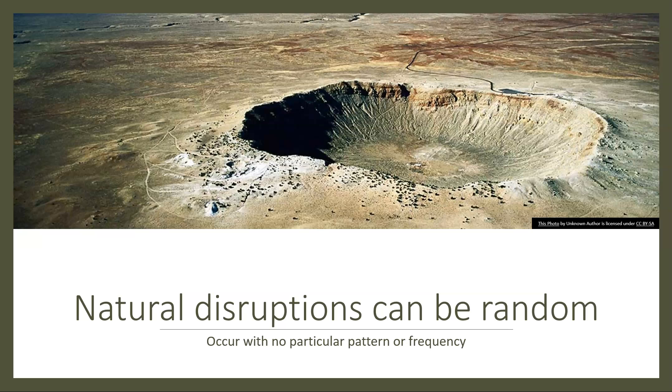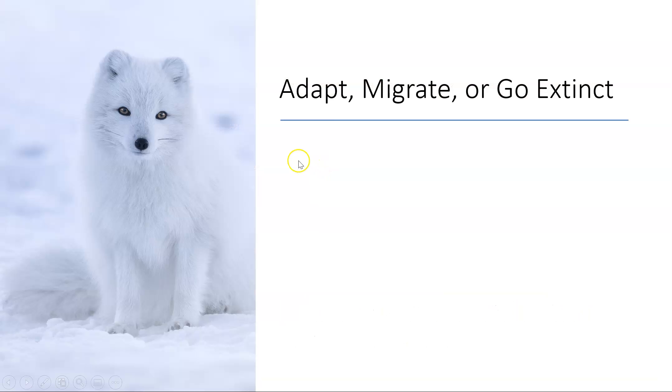We can have natural disruptions that are entirely random. There's no set periodicity or particular pattern or frequency to them, like meteorite impacts. The lesson here is that natural disruptions can be relatively small and localized and maybe impact a small ecosystem in a small way. But natural disruptions can be huge and change the entire global system. It depends on the severity of it, how quickly that change occurs, et cetera.